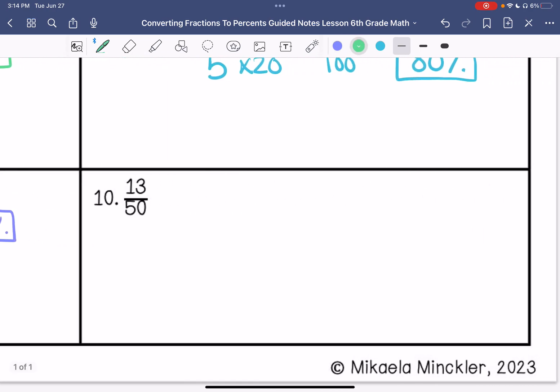Number 10, last one. 13 over 50. What times 50 is 100? That is times 2. 13 times 2 is 26. So this is 26%. Thank you.